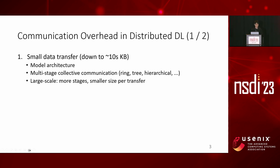We discuss the overhead of inter-GPU communication in two aspects. First, the data transfer size is small, often as small as only tens of kilobytes. The small data size is mainly due to the model architecture itself, and it becomes even smaller if we use multi-stage collective communication algorithms. For efficient communication, we need to minimize the control plane overhead for event handling between small data transfers.